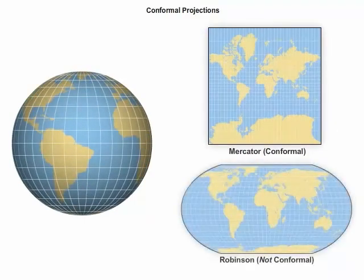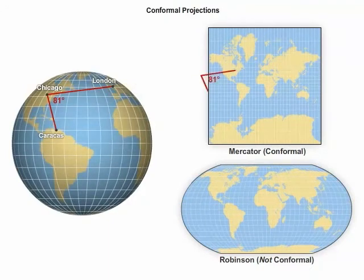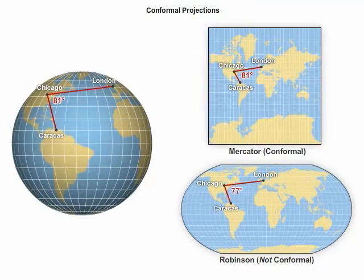Compare the conformal map to a map projection that does not preserve shape. You can see that conformal maps accurately display shape and angles on a map.